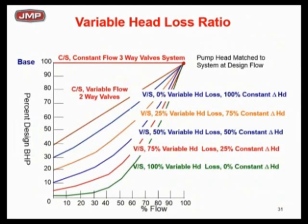Let's jump up to the blue line: 50% variable head and 50% constant head. At 50% flow, we're at about 40% brake horsepower. Going all the way to the top straight line — 100% constant head, 0% variable — at 50% flow I'm up to roughly 75% horsepower. The message is: as you increase the percent constant head, brake horsepower goes up. Even at zero flow, I'm still running pretty fast and using a lot of horsepower.